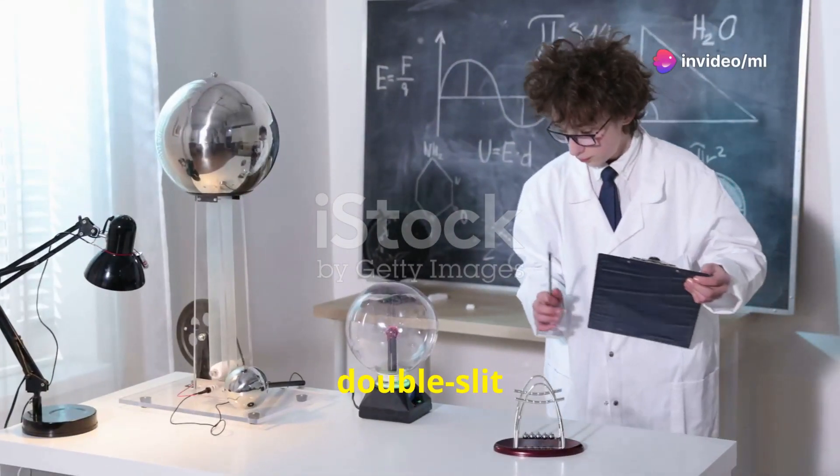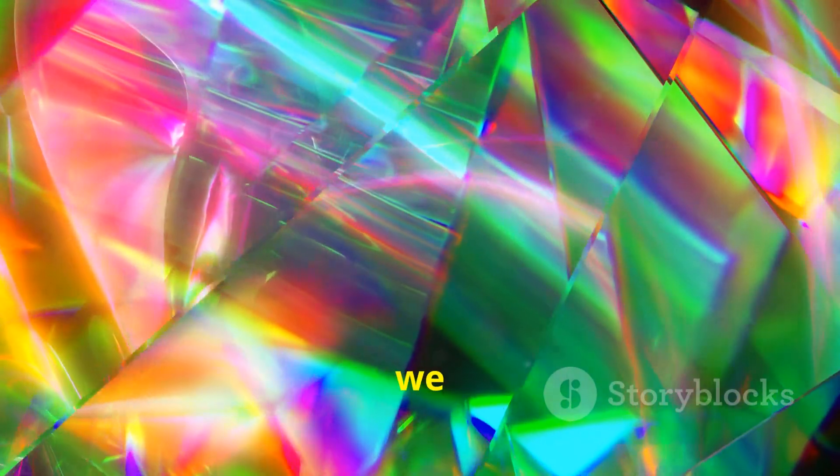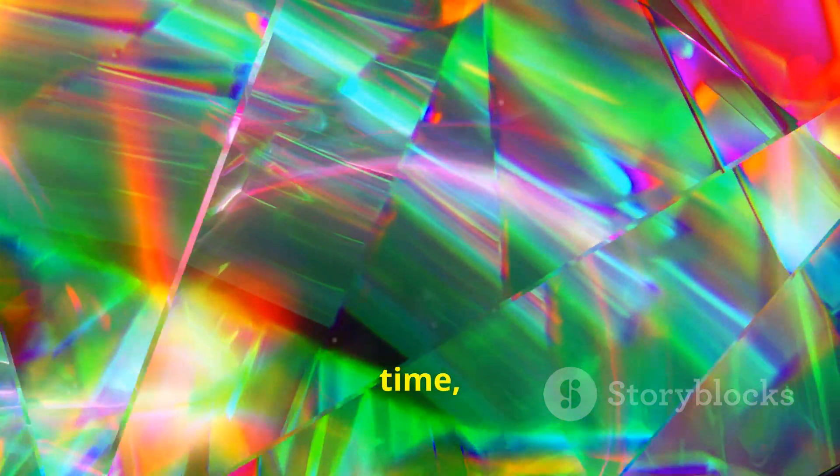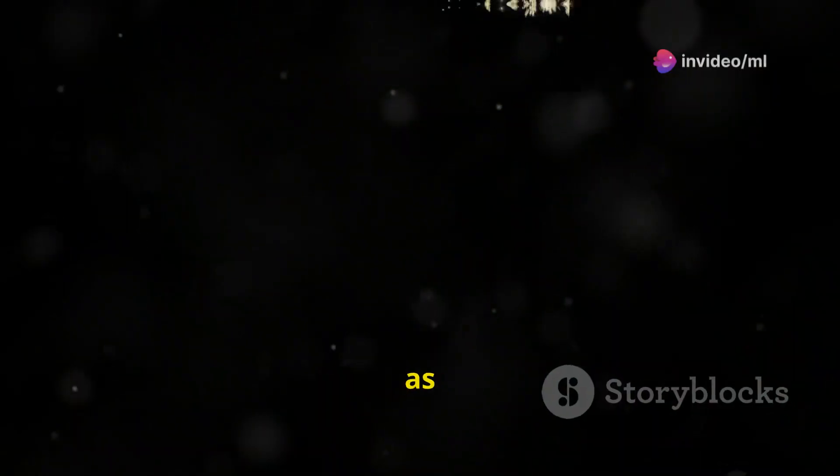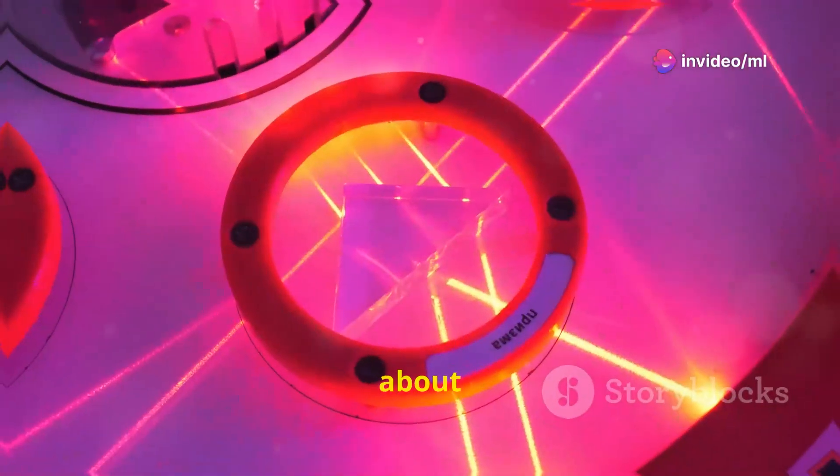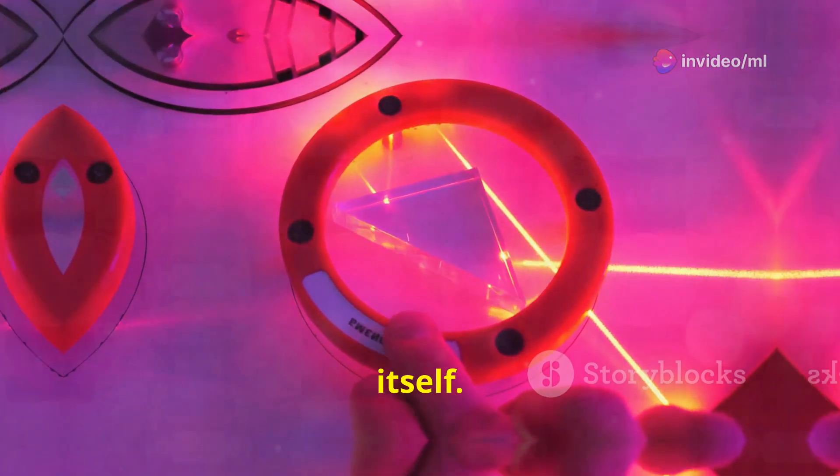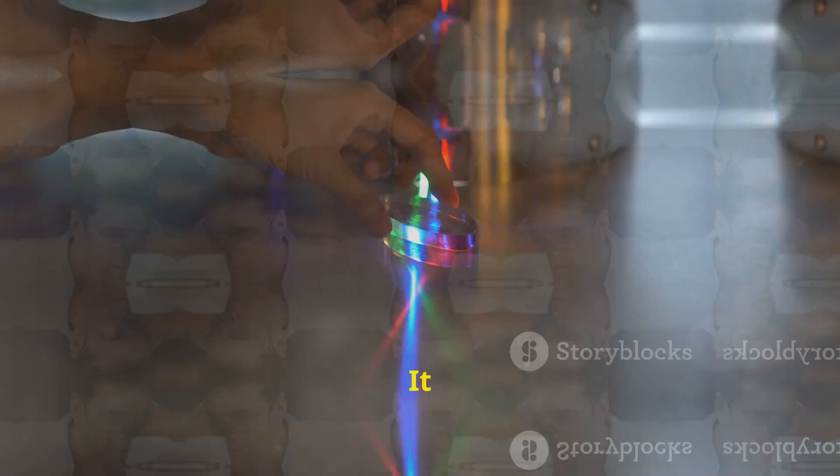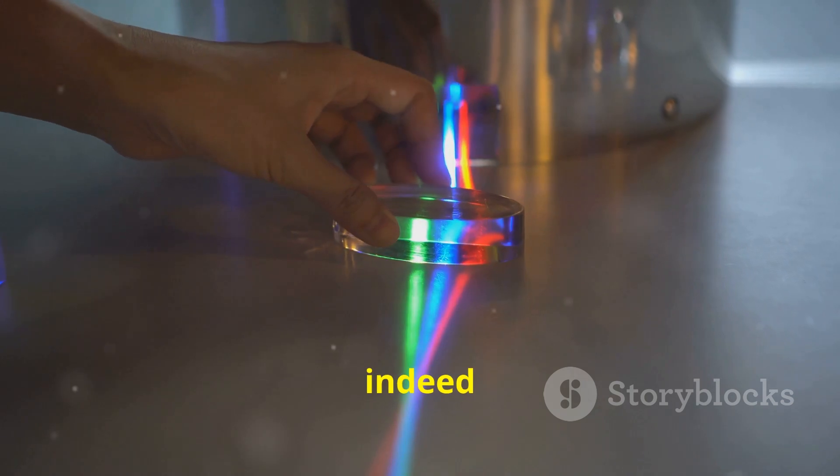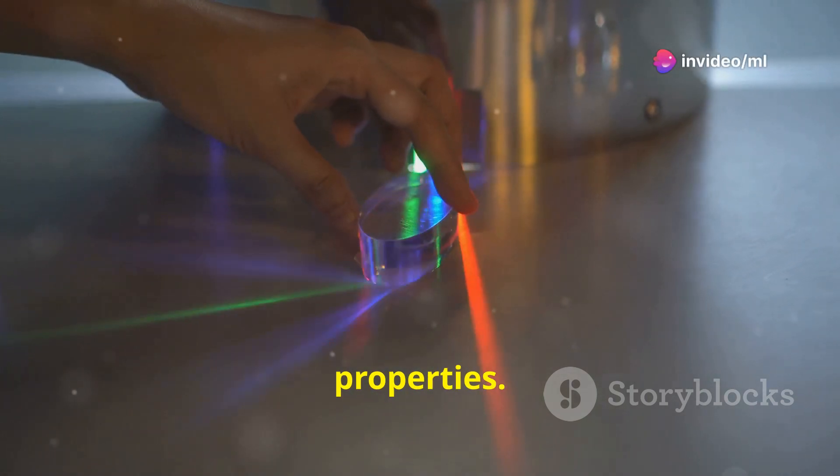This is where the double slit experiment takes a truly mind-boggling turn. Even when we fire photons one at a time, we still observe an interference pattern on the screen. It's as if each photon somehow knows about the existence of both slits and interferes with itself. This is one of the most profound mysteries of quantum mechanics. It suggests that light, and indeed all matter, has both wave-like and particle-like properties. This is known as wave-particle duality.